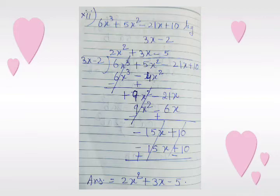We multiply 3x minus 2 with 3x and get 9x squared minus 6x. After changing the sign of the last line, we can cancel the first term. After solving the next term, we get minus 15x.